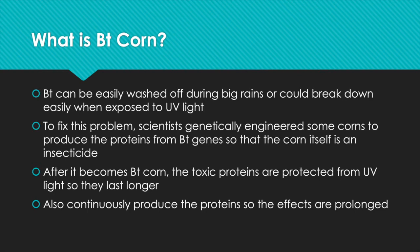What is BT corn? BT can easily be washed off during big rains or could break down when exposed to UV light. So in order to fix this problem, scientists genetically engineered some corn to produce the proteins from BT genes so that the corn itself is an insecticide. After it becomes BT corn, toxic proteins are protected from UV light so they last longer, and they also continuously produce the protein so the effects are prolonged.